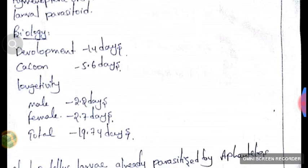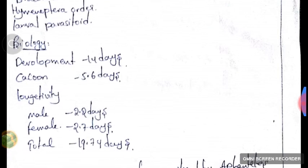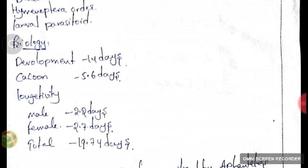Let's see its biology in brief. Development takes place in 14 days. Cocoon formation takes place in 5.6 days. The longevity of male is 2.2 days whereas female is 2.7 days. In total, the life cycle is 19.74 days, approximately 20 days.